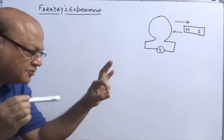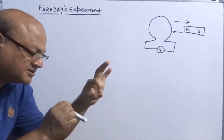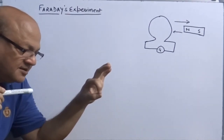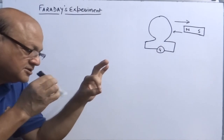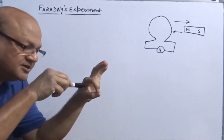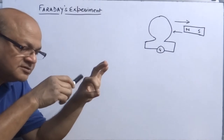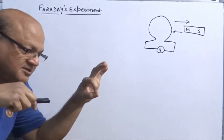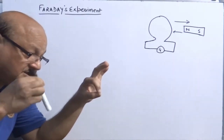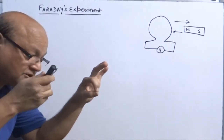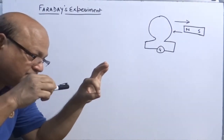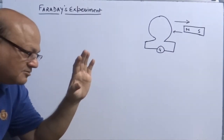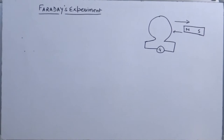When we move the North Pole rapidly towards the coil, there is a deflection in the galvanometer. When the North Pole is moved away from the coil, there is a deflection. When the South Pole is moved rapidly towards the coil, there is a deflection. But if either pole — North or South — is rapidly moved towards the coil and suddenly stopped, the deflection in the galvanometer becomes zero. It was very surprising.